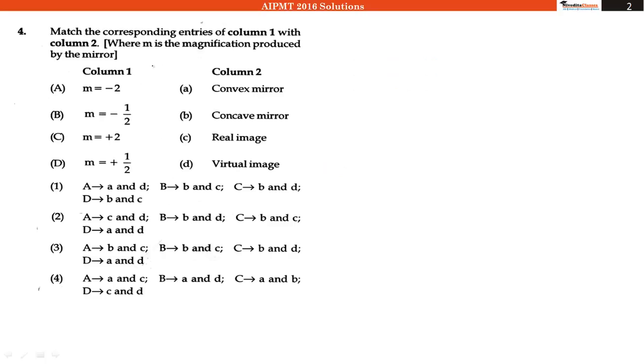Now what is given in this question? In column A we are given the magnification and in column 2 we are given the type of mirror we are using and what kind of image has been created, the nature of image has been given to us.